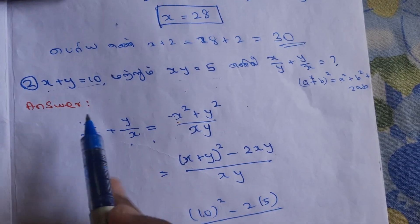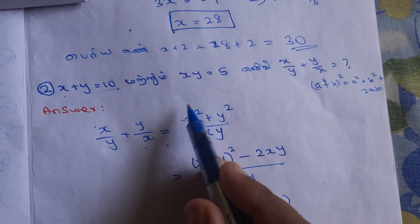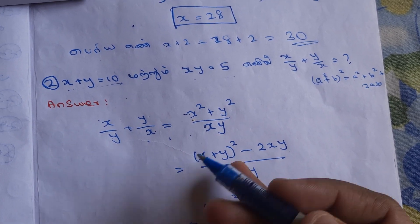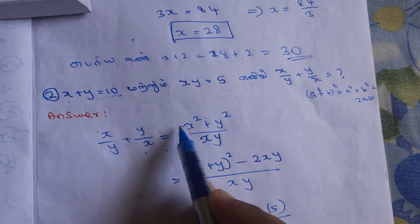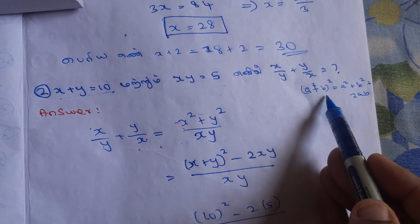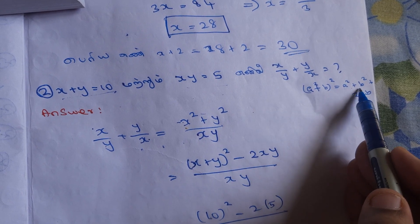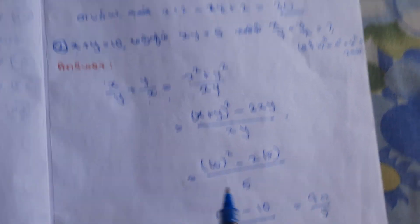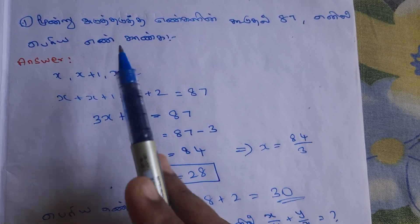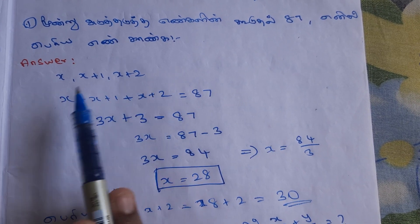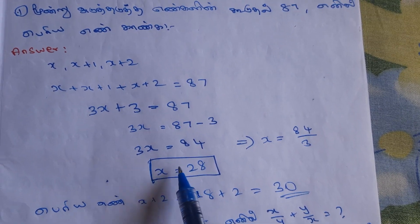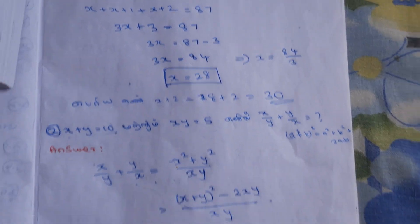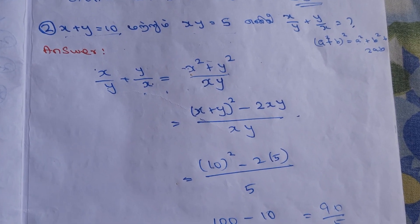So the value of x by y plus y by x is 18. We will try this formula for simplification — we can easily solve this type of problem using this formula. This is the formula for simplification. Subscribe to my channel at the end of the video. Thank you.